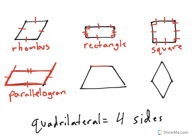The next shape has only one set of parallel sides. That means that only the top and bottom will never cross if they were to go on forever. The left and the right, if those kept going, they would actually meet eventually. This shape is called a trapezoid — one set of parallel sides is a trapezoid.